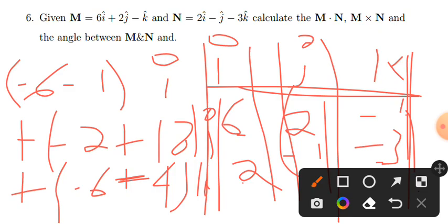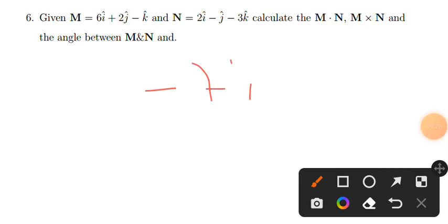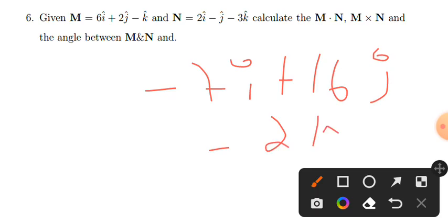The j component is -2 plus 4, which equals 2. The k component is -6 plus 4, which equals -2. So M×N equals -7i + 2j - 2k.